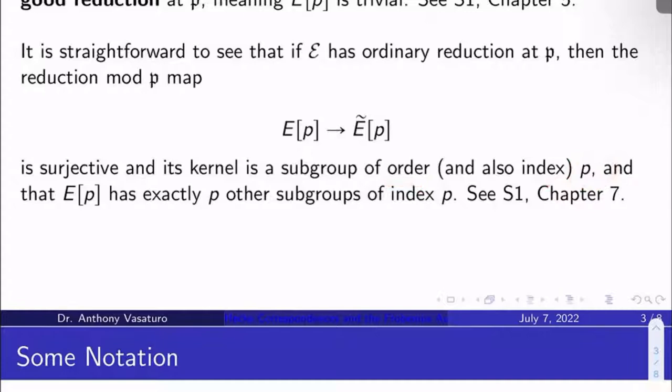So the order and the index will be the same and they'll both be p for the kernel. And you can also check that the p-torsion of E has exactly p other subgroups of index p.